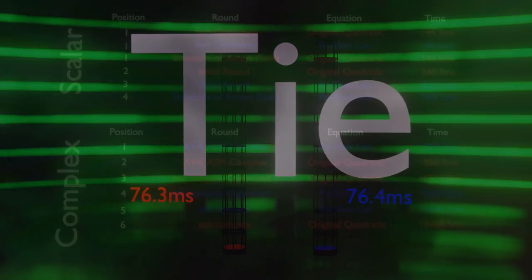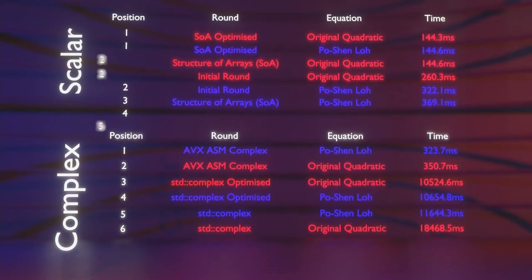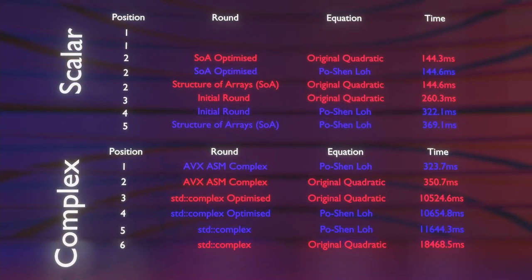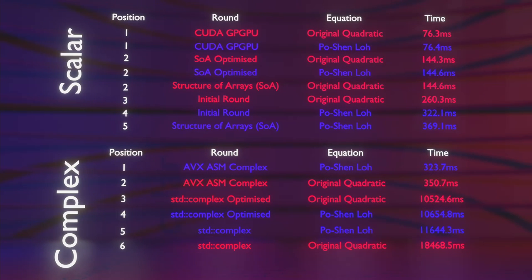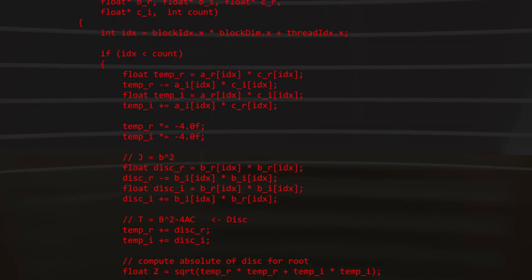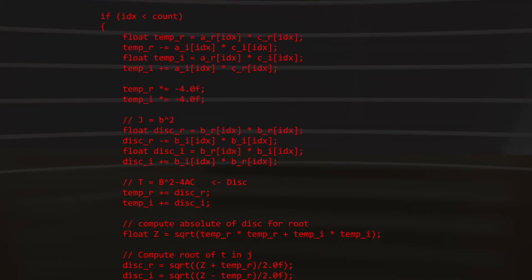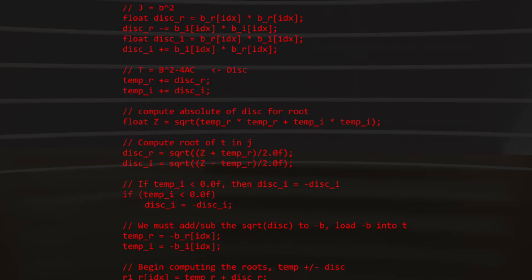Another tie! Both formulas perform equally well, running at roughly double the speed of our fastest CPU scalar code — pretty much what you'd expect from a graphics card.